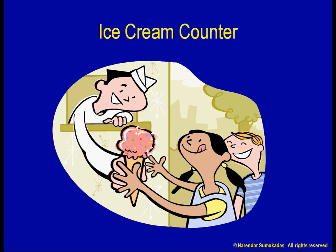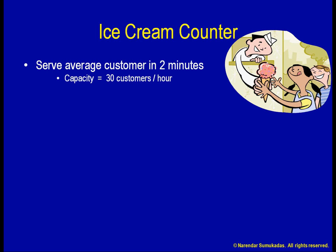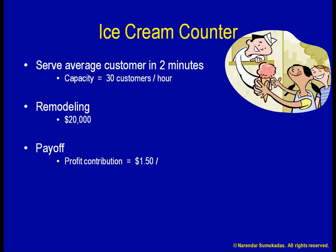If I increase the capacity of my ice cream counter, I think I will be able to avoid such lost business. My counter is currently able to serve an average customer in about 2 minutes, so its capacity is 30 customers per hour. Increasing the ice cream counter capacity involves a bit of remodeling. I estimate that the expansion will cost $20,000, but I think I can pay that off quite easily. The variable costs for the ice cream are not very high, and I make a profit contribution of $1.50 on each ice cream sold. I now want to run some numbers to see if I will be able to recoup my investment in a reasonable time frame.